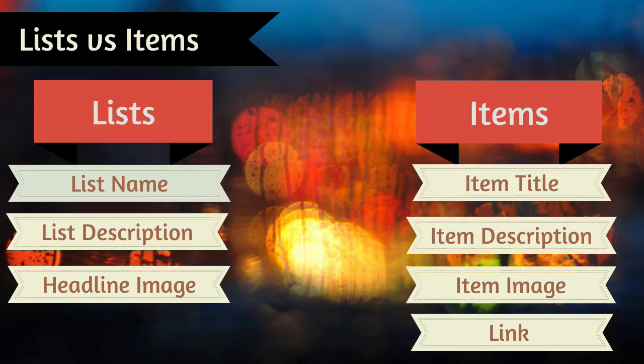We've now looked at three types of lists on Listly — how to create them and how to edit them. To recap: there are two parts to each list. There's the list itself — the list name, its description, and a headline image. And then every item on the list has a title, a description, an image, and optionally a link. All of this information works together to make your list highly findable, highly reusable and shareable, and highly embeddable across websites.